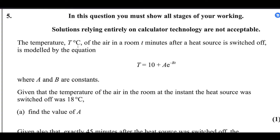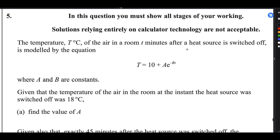The temperature T degrees Celsius of the air in a room, t minutes after the heat source is switched off, is modelled by the equation T equals 10 plus A e to the power minus Bt, where A and B are constants. Given that the temperature of the air in the room at the instant the heat source was switched off was 80 degrees Celsius, find the value of A.